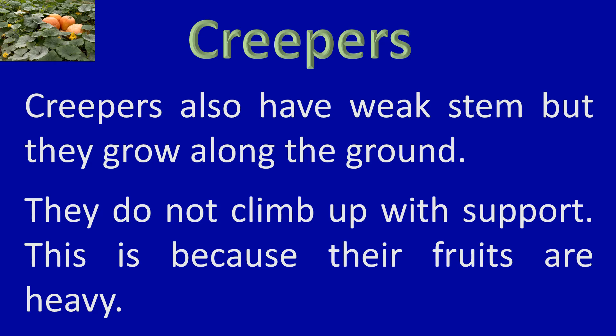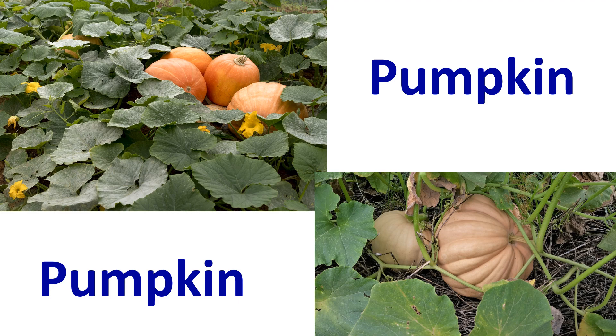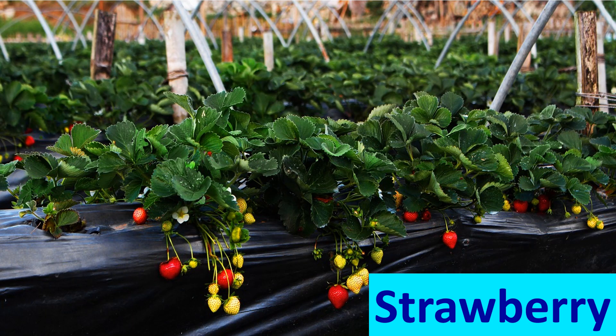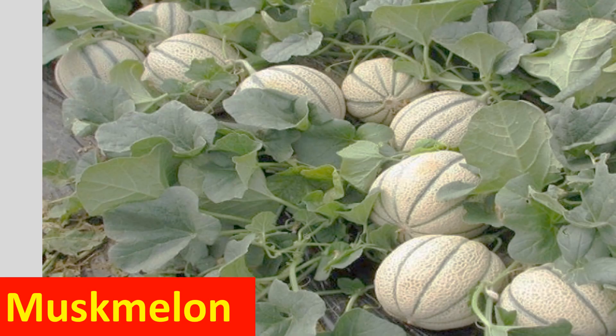Creepers also have a weak stem, but they grow along the ground. They do not climb up with support because their fruits are heavy. Let us see some examples: Pumpkin, Watermelon, Strawberry, and Muskmelon.